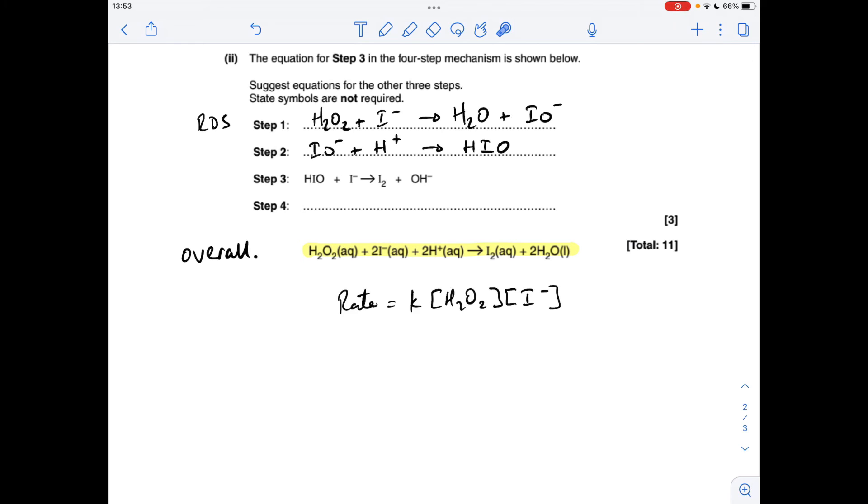I'm just going to pause now and just reflect on what we've got. We've got the first three steps. We've got the overall equation. So what we can do, if we add all of these steps together, we can then compare what's in those, the sum of those three steps, with what's needed for the overall equation. And then we can find out if we're missing anything or if we need to cancel anything out.